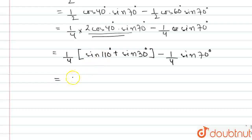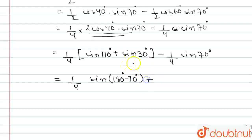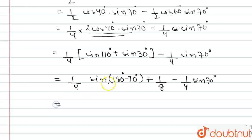Now sin(110°) can be written as sin(180° − 70°). The first term becomes (1/4)·[sin(180° − 70°) + sin(30°)]. Since sin(30°) is one-half, multiplying by (1/4) gives 1/8. Since sin(180° − θ) = sin(θ), the sin(70°) term from the expansion and the (1/4)·sin(70°) third term both cancel out, and we are left with only 1/8.